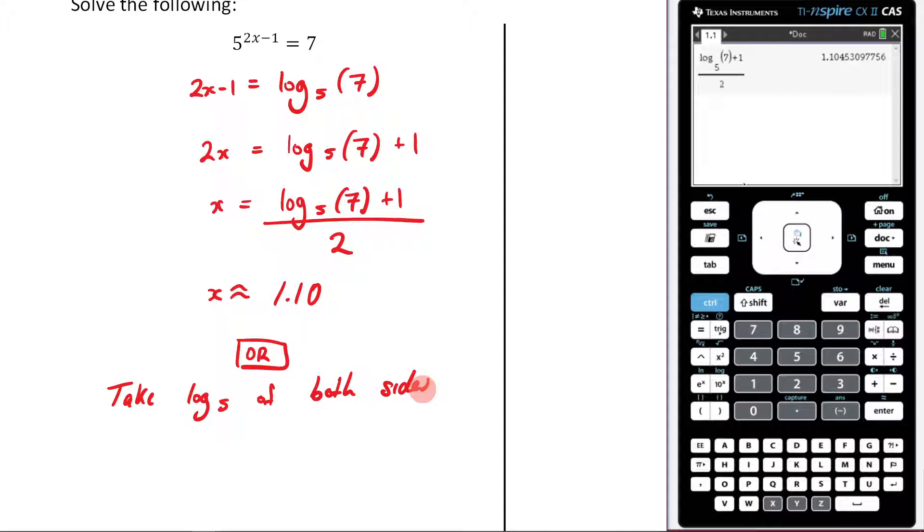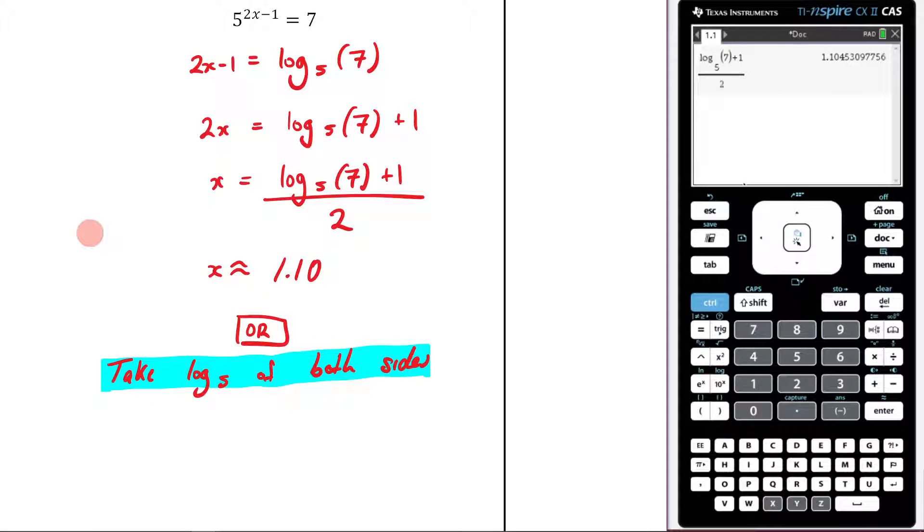So this is an alternative way of doing it. We're going to get the same answer, hopefully, which is a different way of doing it. So this time I'm going to say, all right, log of base 5 of 5 to the 2x minus 1, close brackets, is equal to log of base 5 of 7.